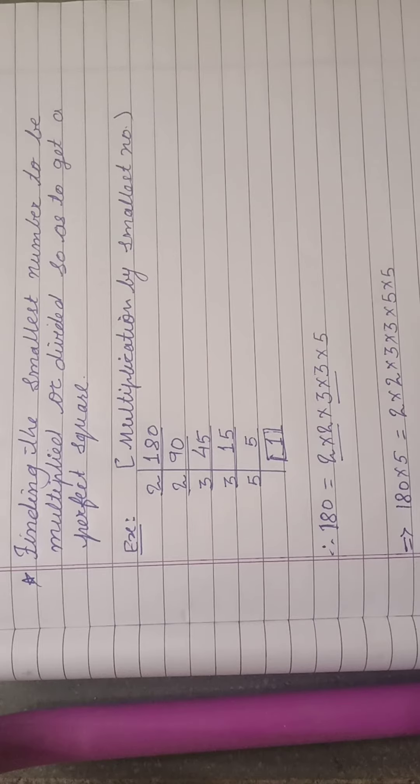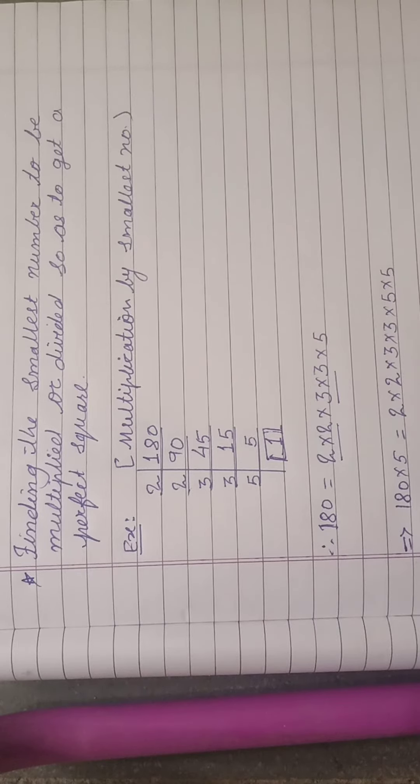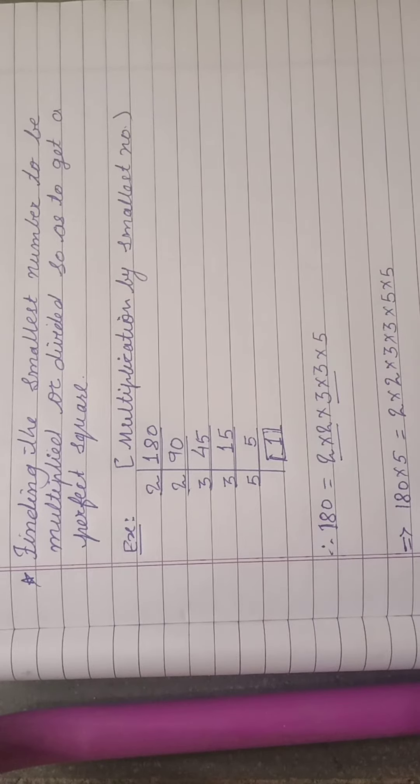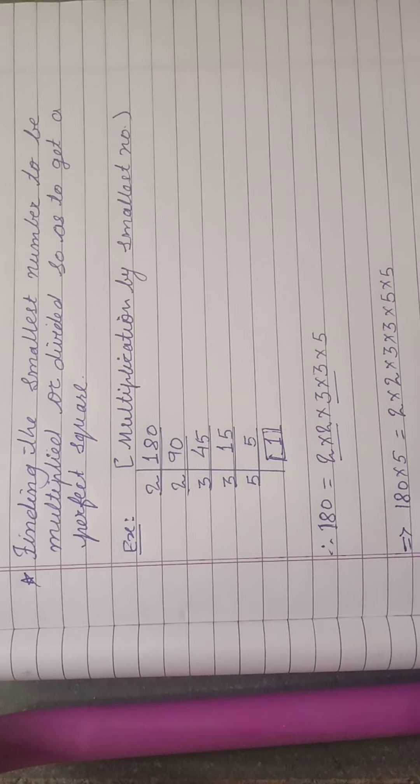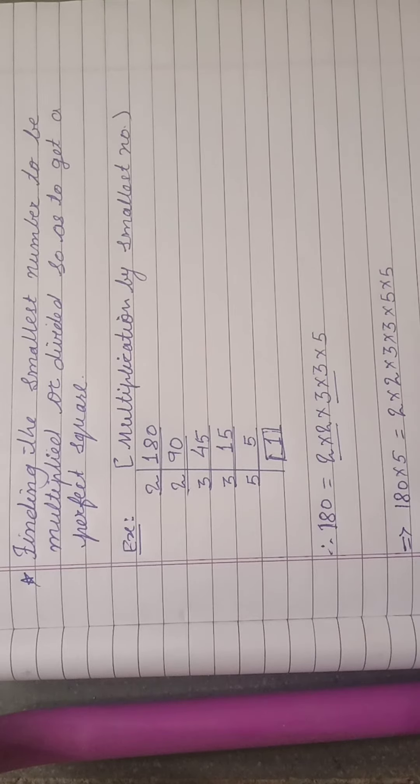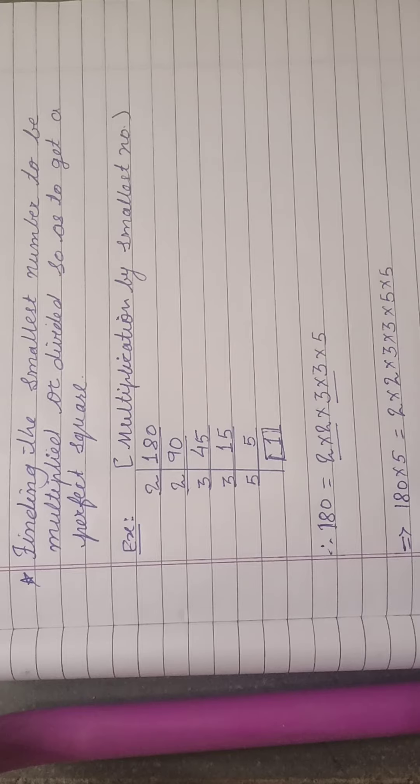You can see that 2 and 3 are paired, but 5 is not paired. As 5 is not paired, it means that 180 is not a perfect square number. But we want to find the smallest number which is to be multiplied so that 180 will become a perfect square number.